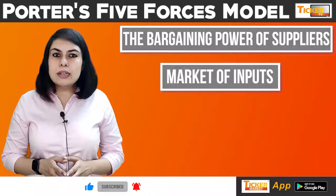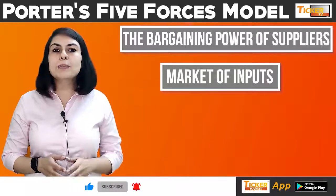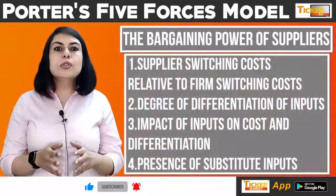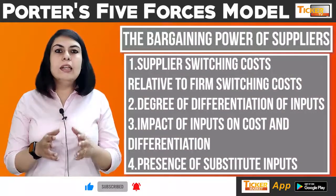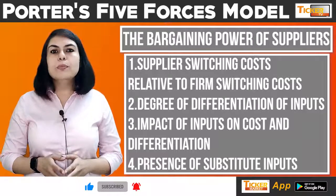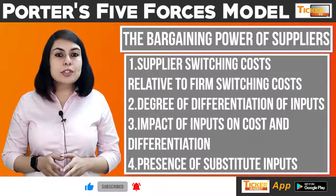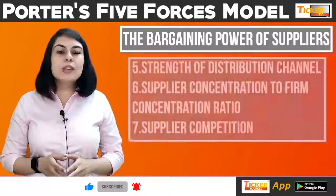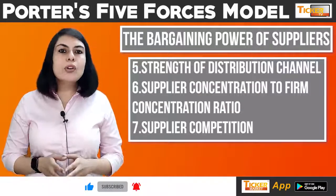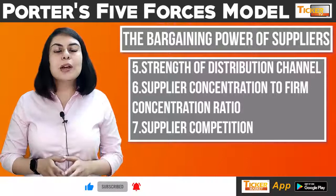Michael Porter lists the following major potential factors of the bargaining power of suppliers: 1. Supplier switching cost relative to firm switching cost, 2. Degree of differentiation of inputs, 3. Impact of inputs on cost and differentiation, 4. Presence of substitute inputs, 5. Strength of distribution channel, 6. Supplier concentration to firm concentration ratio, and 7. Supplier competition.